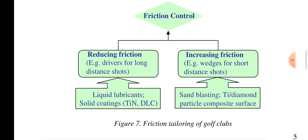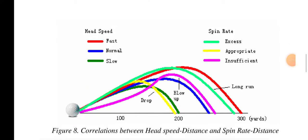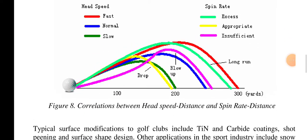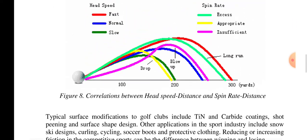Friction control works by reducing friction for drivers for long-distance shots, and increasing friction for wedge shots over short distances. Liquid lubricants or solid coatings such as titanium, titanium-nickel, DLC, sand blasting, and titanium-diamond particles compose the surfaces. These are the areas where surface engineering is used, with high hardness being a key property — this is the typical area where spin rate and high hardness data are relevant.